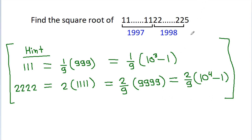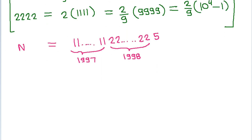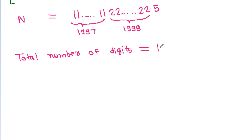Suppose this number is equal to n. Then n is equal to 1,1,1...1 (1997 digits) times 2,2,2,2...2 (1998 digits) times 5, and the total number of digits is equal to 1997 plus 1998 plus 1.